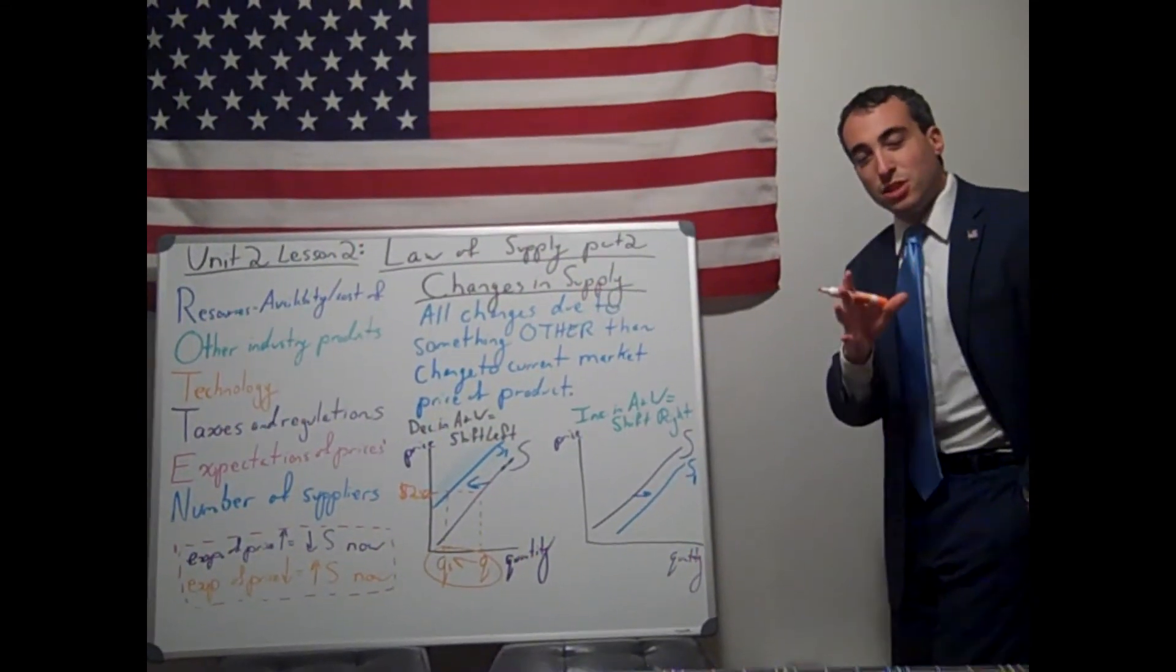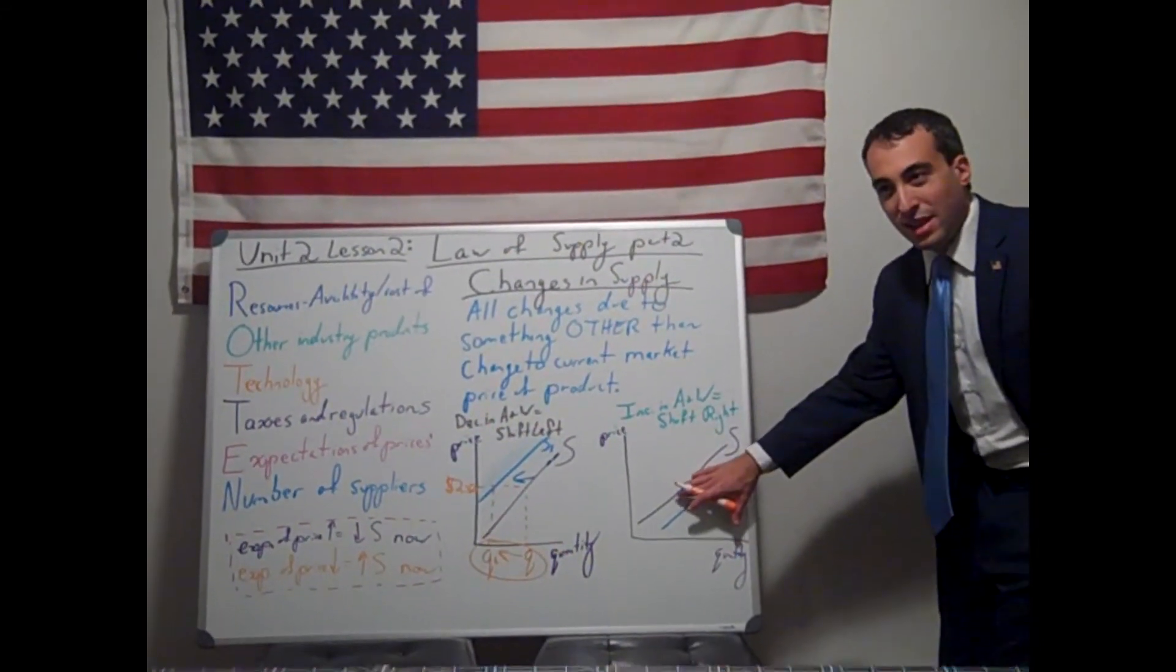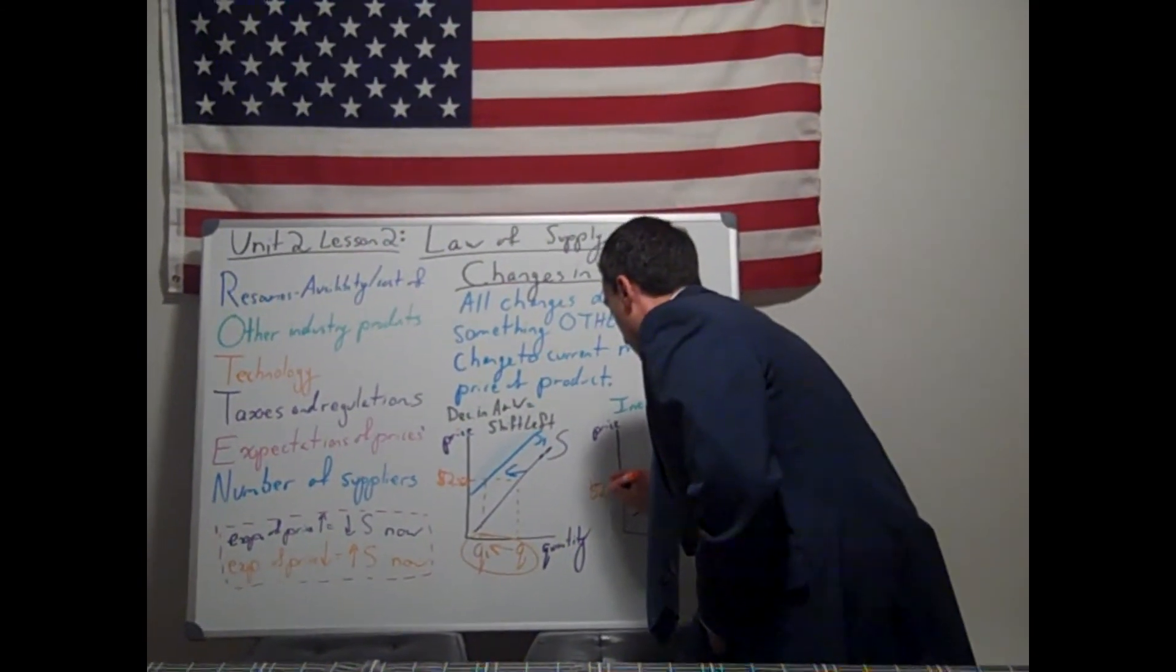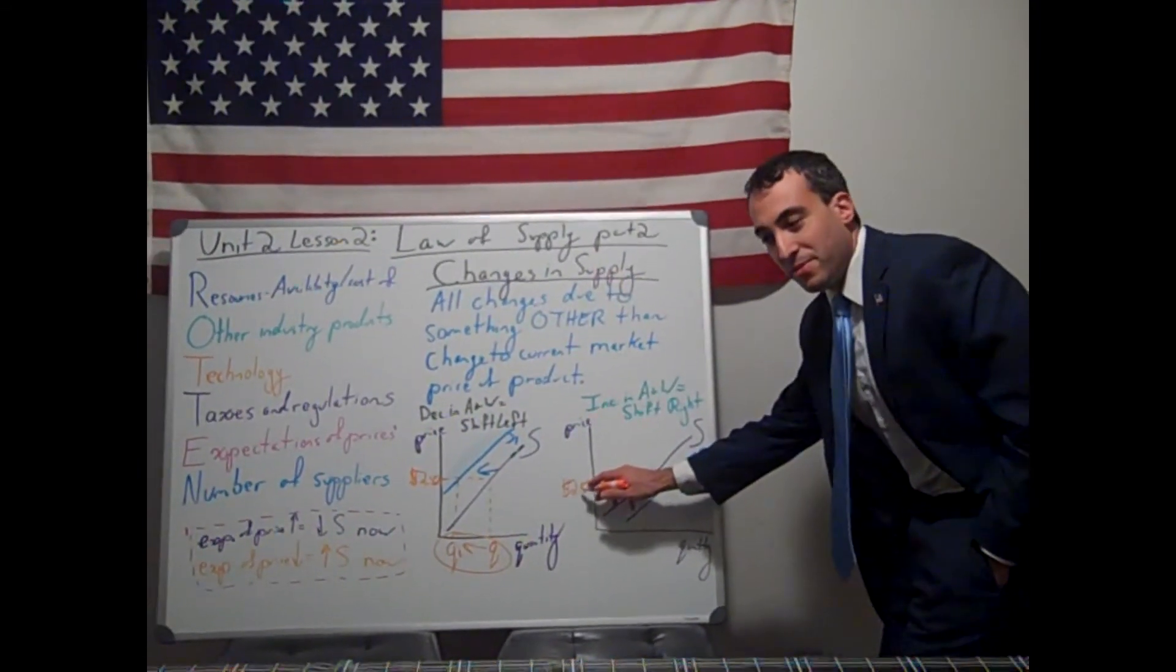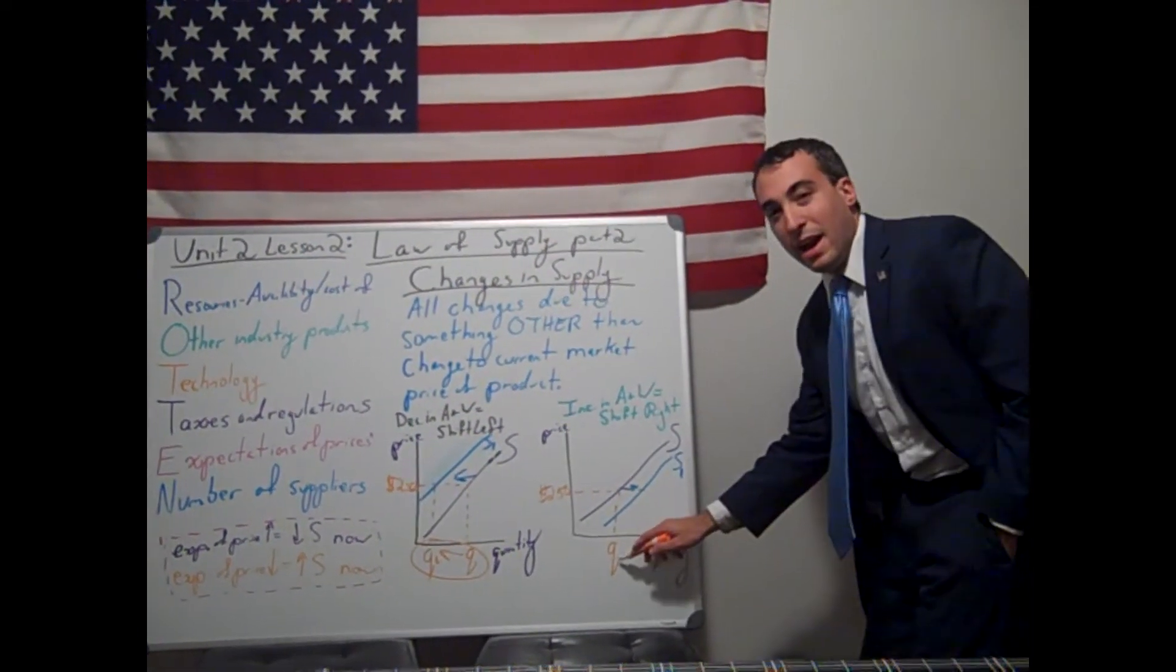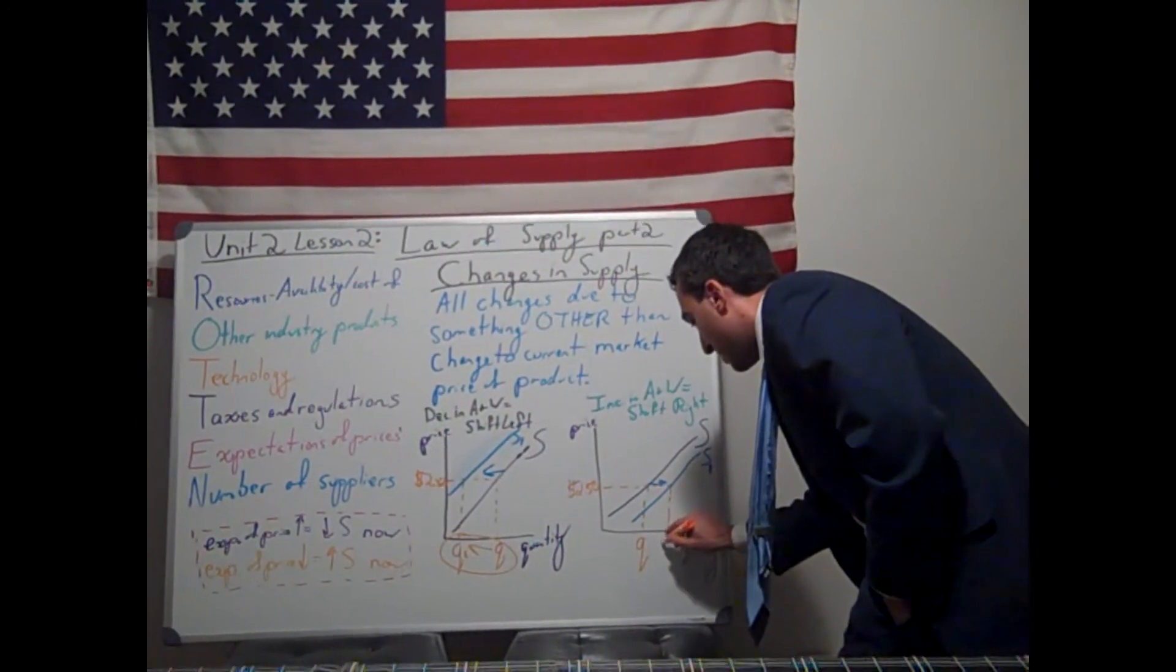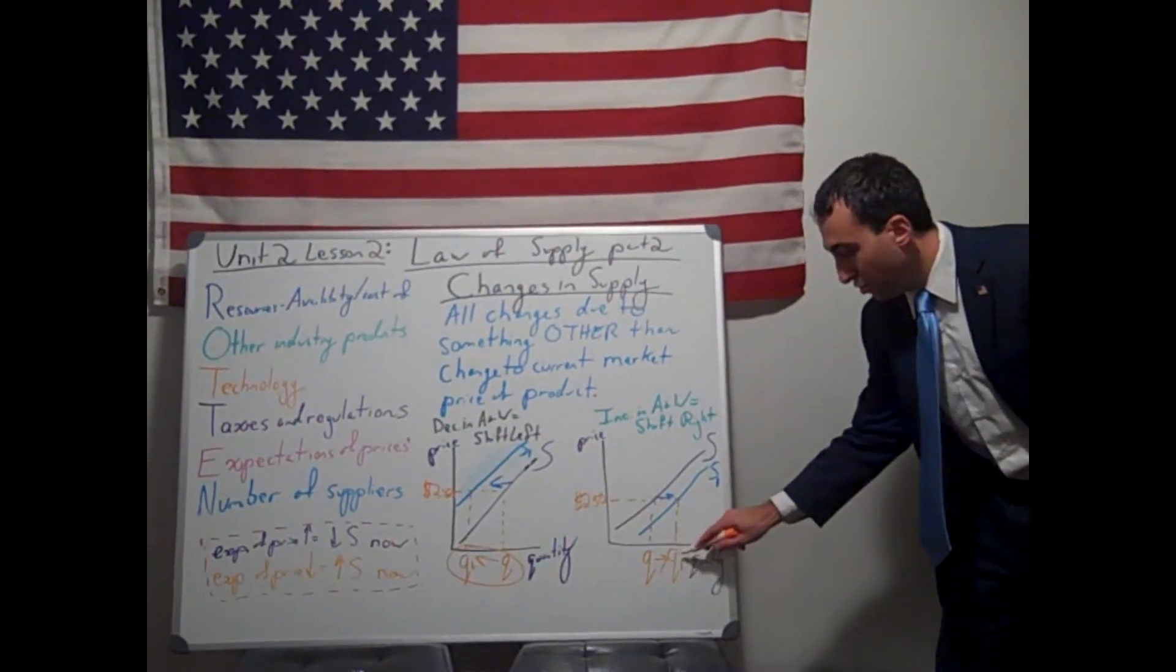And again, watch out for that optical illusion on the supply curve. That S1 looks like it's below S. So you might say, oh look, supply is decreasing. No. Supply is increasing. Because at our $2.50, originally we were at Q. But now, due to the decrease in input costs, at the same $2.50, we are now at Q1. Q1 being greater than Q.